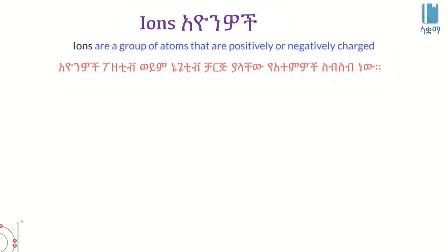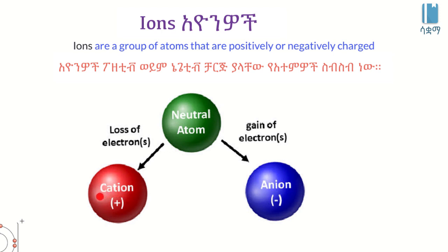Ion is positive. Positive charge is plus, negative charge is minus. Ion can be positive, negative, or neutral.